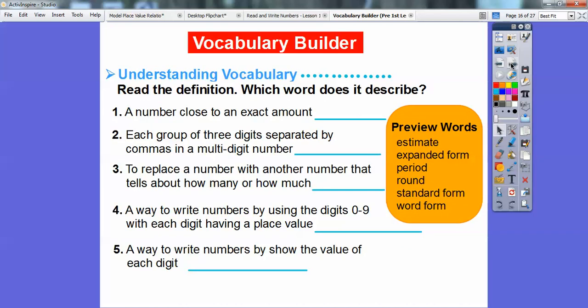Here we have some more vocabulary building. So read the definition. Which word does it describe? These are kind of tricky, you guys. So I have some preview words: estimate, expanded form, period, round numbers, standard form, word form. Some of these you're probably not aware of. A number close to an exact amount. Which one would that be? Hopefully you guys can see it's an estimate. So when you're estimating, you're estimating.